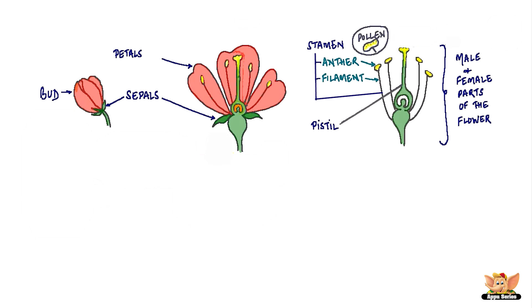The top of the pistil is called a stigma. The stigma is covered with a gluey substance that the pollen grains stick to.